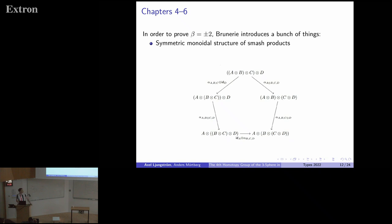We hate smash products in the HoTT community because they're impossible to reason about. I'm going to throw a lot of diagrams and stuff on you. You don't need to know what they say. It's just to make it look impressive and really hard. But you need this symmetric monoidal structure of the smash products in order to define something called the cup product, which is a product on cohomology groups.